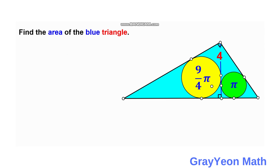Our approach for this problem is straightforward. Since we are required to find the area and we are given the height, we can find the total length of the base. First, we need to get the radius of these two circles.